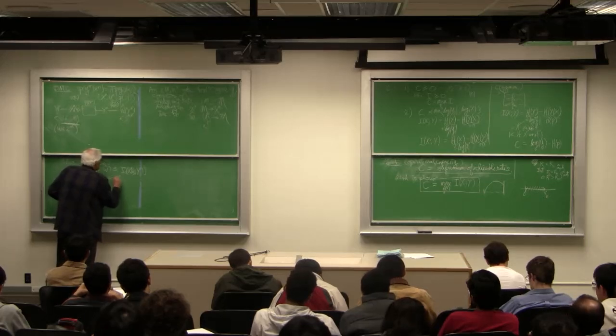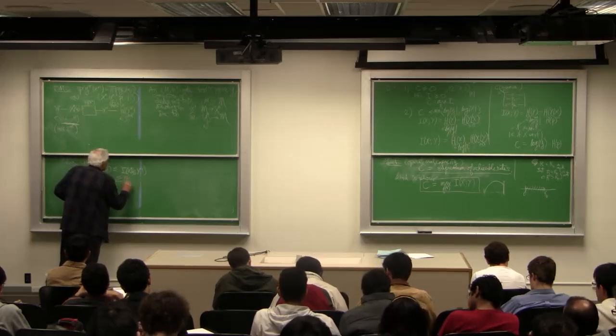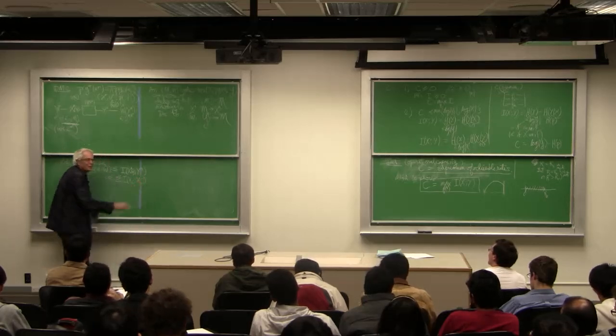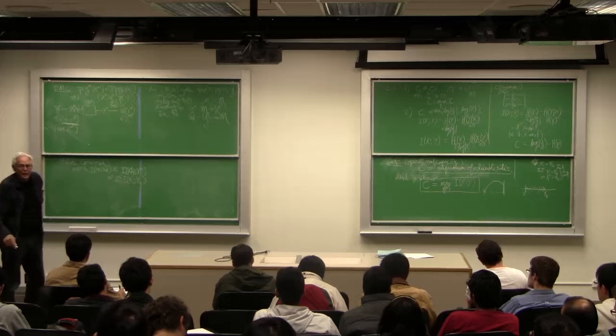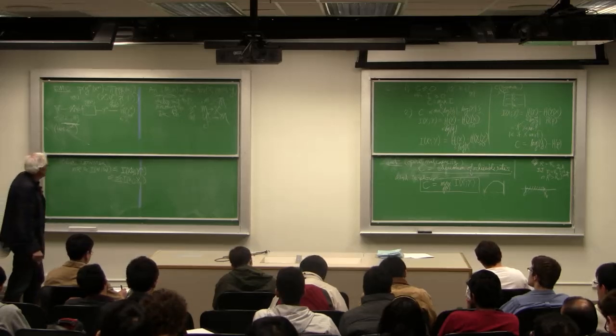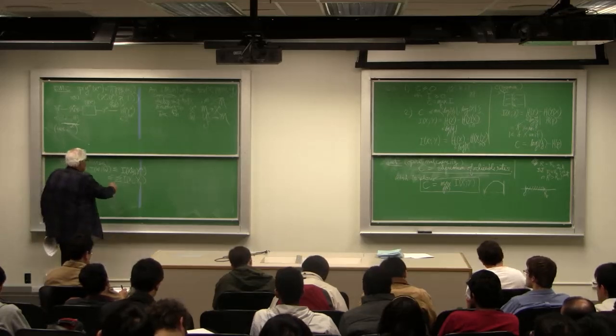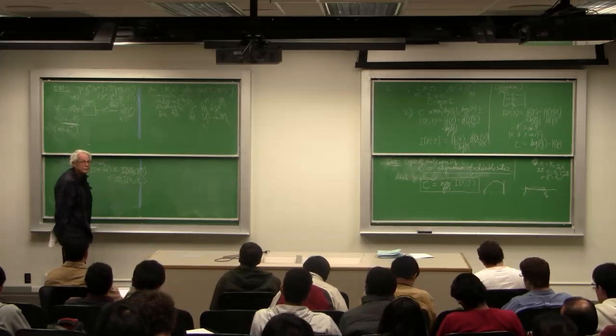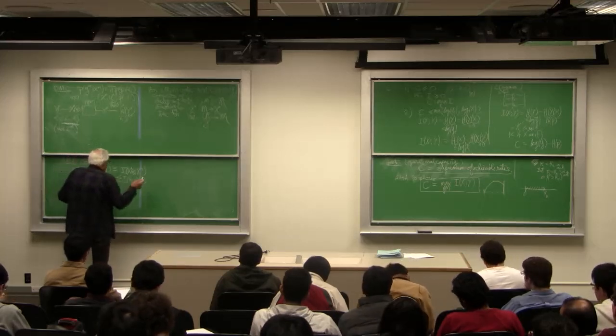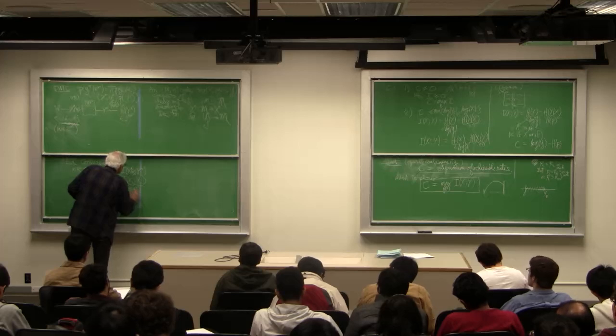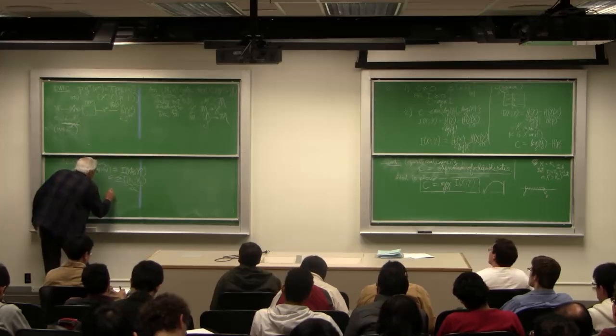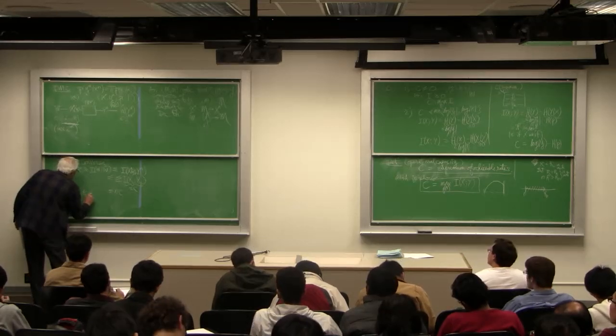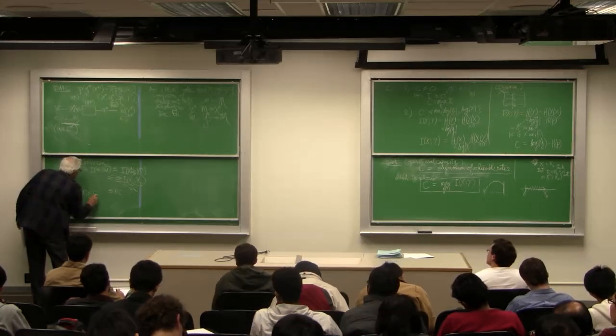And then this is less than summation I of XiYi. And on the midterm, you had something like this. And on the homework assignment, you had something like this where it shows that if it's not a memoryless channel, the capacity can be higher. But each of these is less than C. So this is less than Nc. Therefore, R is less than capacity.